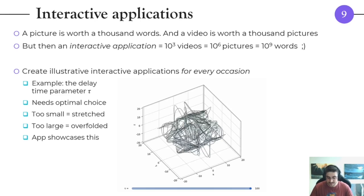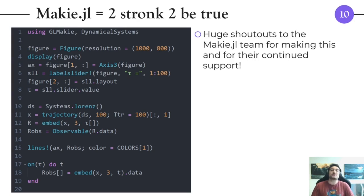How do you make these interactive applications? Of course you use Makie.jl which is literally too strong to be true. Huge shoutouts to the Makie team for making this and for their continued support. I personally have received a tremendous amount of support from Julius and Simon and many others, so thank you for that. This code snippet over here is exactly how you make the animation or the application of the previous slide. You can see it's really really simple. You start up with a figure and you put a three-dimensional axis in this figure, and then you put a slider in the figure. The slider is about the delay time. Then you initialize an observable that contains the reconstructed set, and what you do is simply whenever the slider is triggered you update the observable with a new reconstructed set that has a new delay time for the reconstruction. That's it.